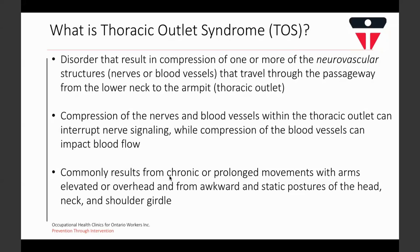Some of the consequences of compression of nerves in this area can be an interruption of nerve signaling, which has various effects including pain and paresthesia, while compression of blood vessels can affect blood flow to the limb. TOS has several causes and commonly develops as a result of functional activities, which can include chronic or prolonged movements with elevated arms or persistent static postures of the head, neck, and shoulder region.